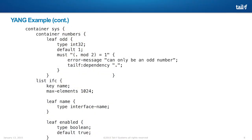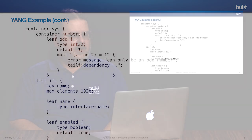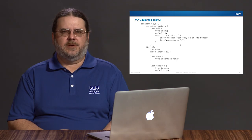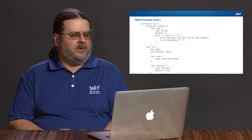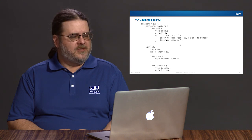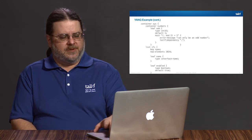The other key statement to know is list. You can think of a list in Yang as equivalent to a table. A list has entries — those entries you can think of as rows in a table. When you declare a list, such as a list called IFC, you'll declare keys. These you can think of as key columns in a table, and then the remaining columns are described in your list definition in Yang.